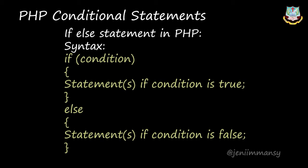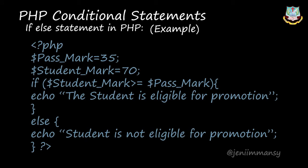In this example, pass mark is equal to 35 and student mark is 70. If the student mark is greater than or equal to pass mark, the student is eligible for promotion. Otherwise, if the student mark is smaller, the student is not eligible for promotion. If the condition is true, the first set of statements executes; if false, the else part statement will be executed. Here only true and false cases are there.